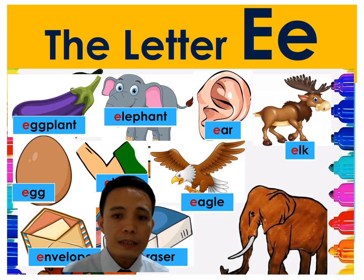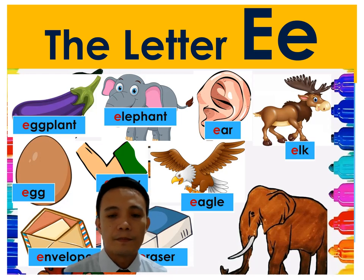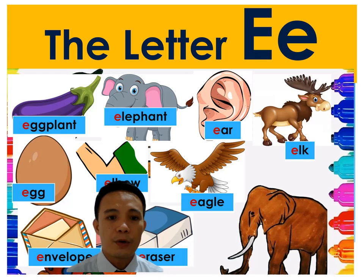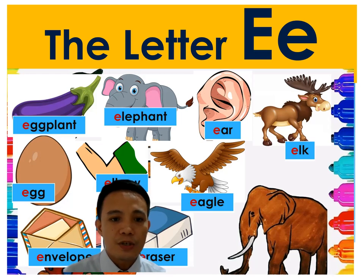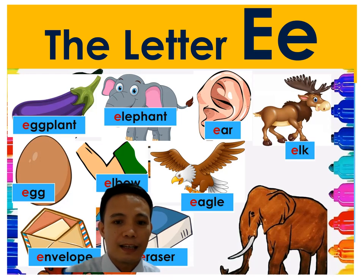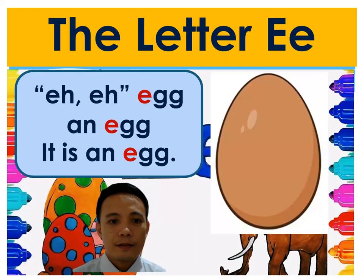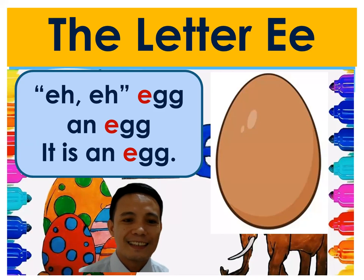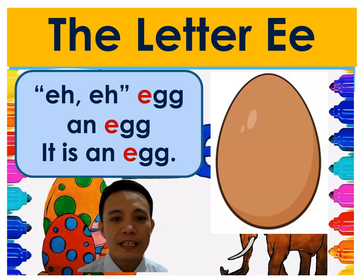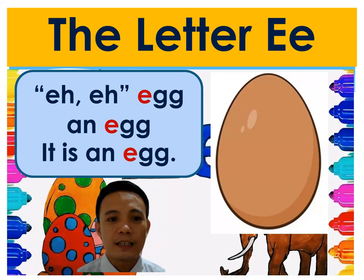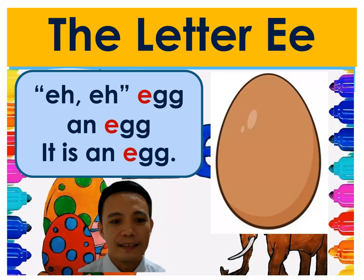I will tell you some examples of the long E later on. So you can see here some representing pictures for the letter E. First picture — what is in the picture? It's an egg. How do we sound the letter E here? It's 'eh' — egg. An egg. It is an egg.